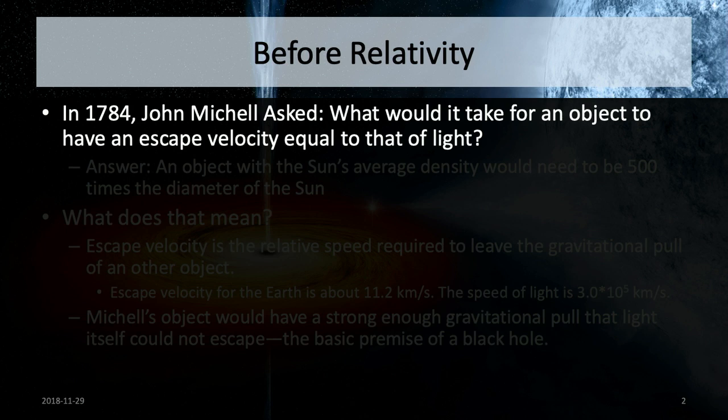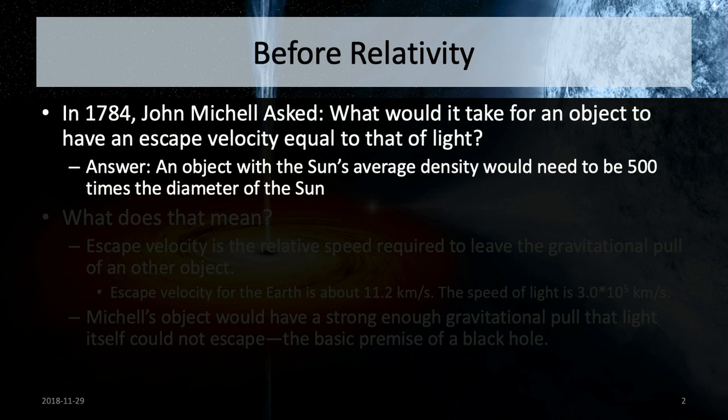All the way back in the 1700s, a guy by the name of John Mitchell actually posed the question: what would it take to have an object with an escape velocity that exceeds that of light? The answer is that if it was the same density as the sun, it would have to be about 500 times the diameter of the sun.